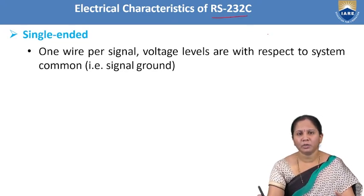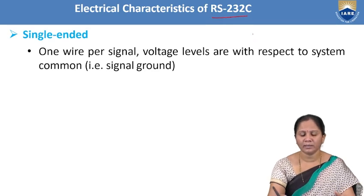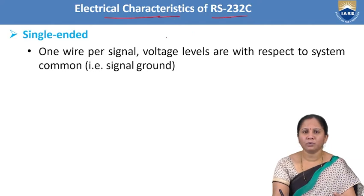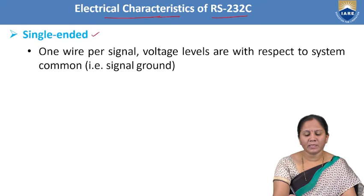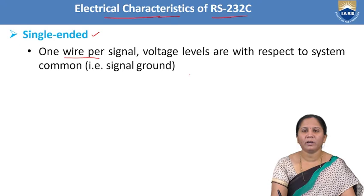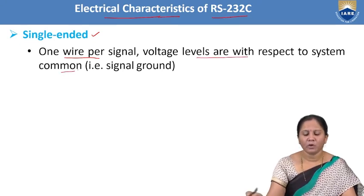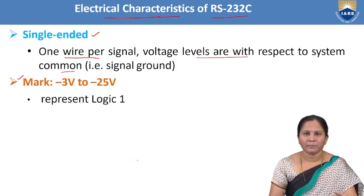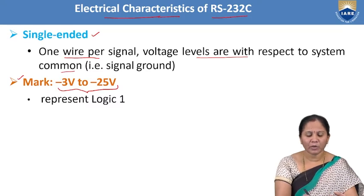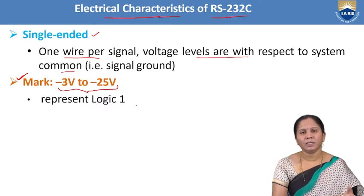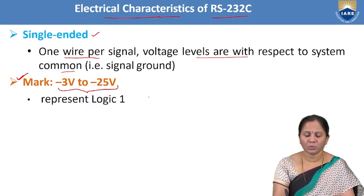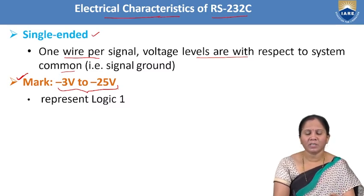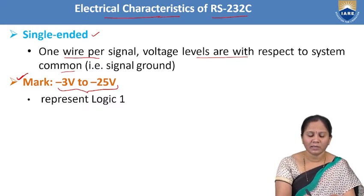Coming to the RS-232C standard electrical characteristics: this cable is single-ended, meaning only one wire per signal. Voltage levels are with respect to a system common — a signal ground. Another characteristic is mark: the voltage within minus 3 to minus 25 volts is called a mark, because logic 1 in TTL is plus 5 volts, but in RS-232 that same voltage is represented in the range of minus 3 to minus 25 volts.